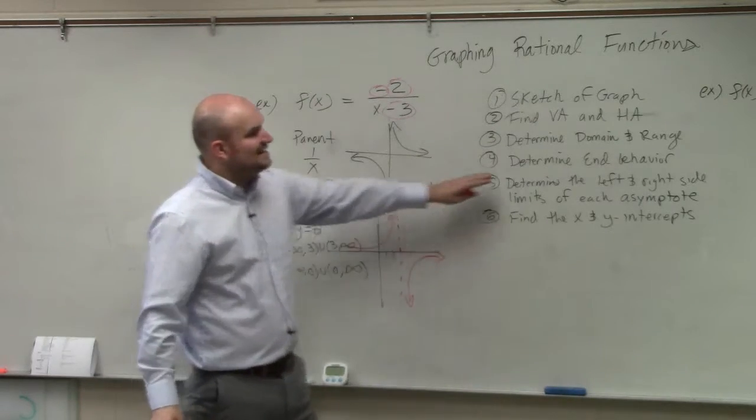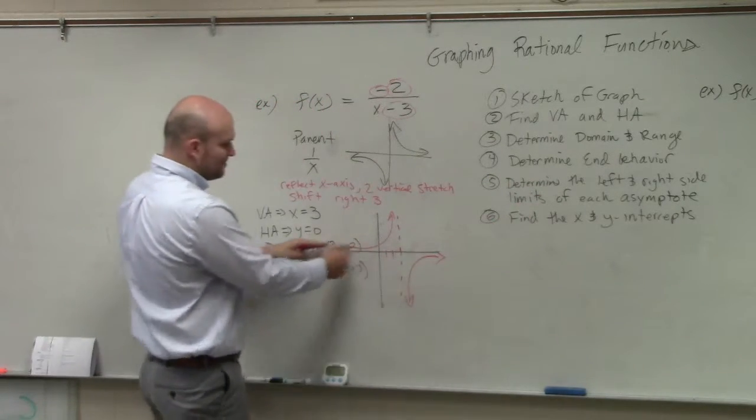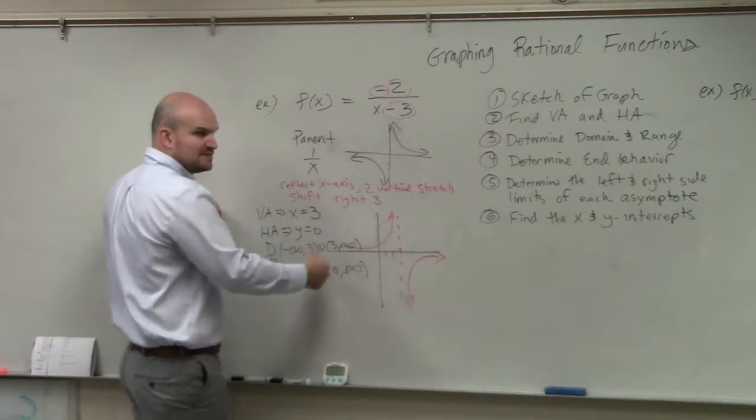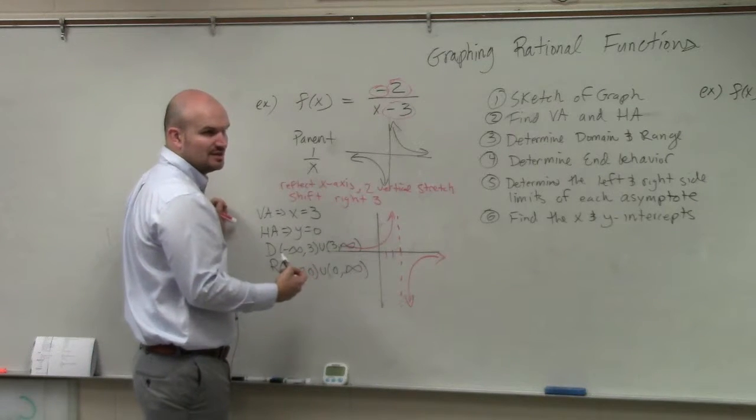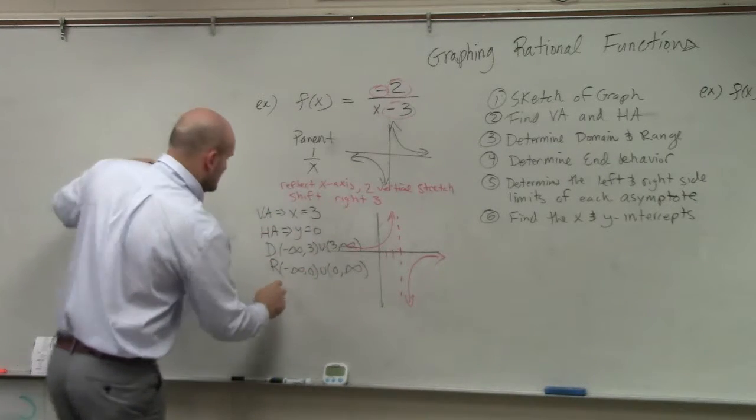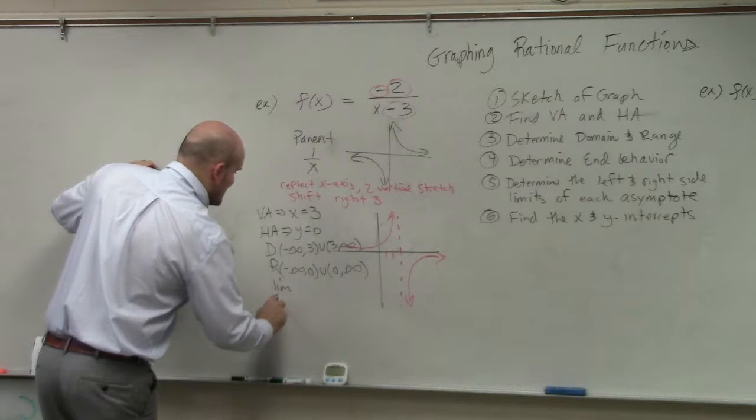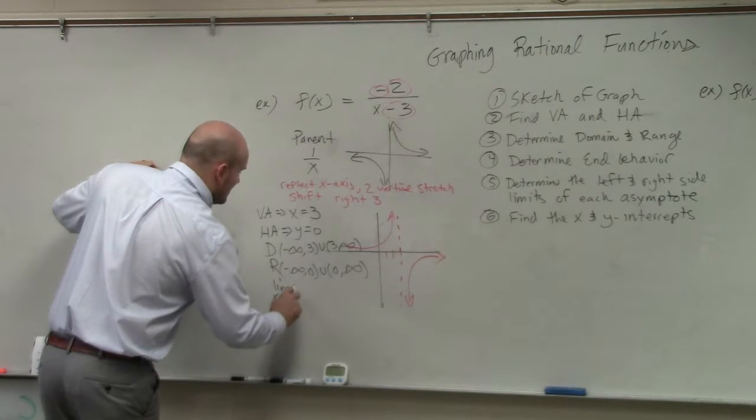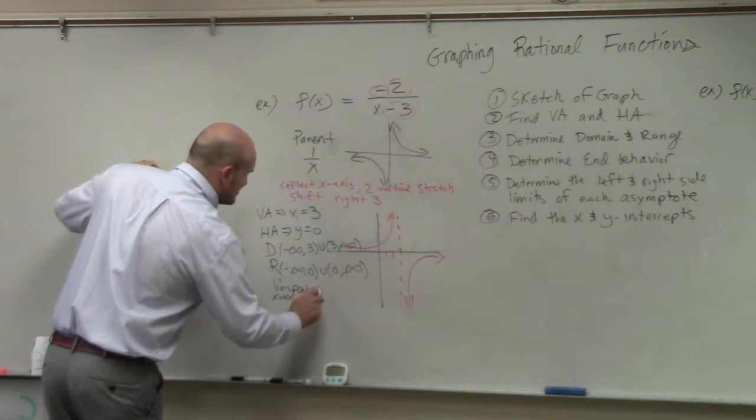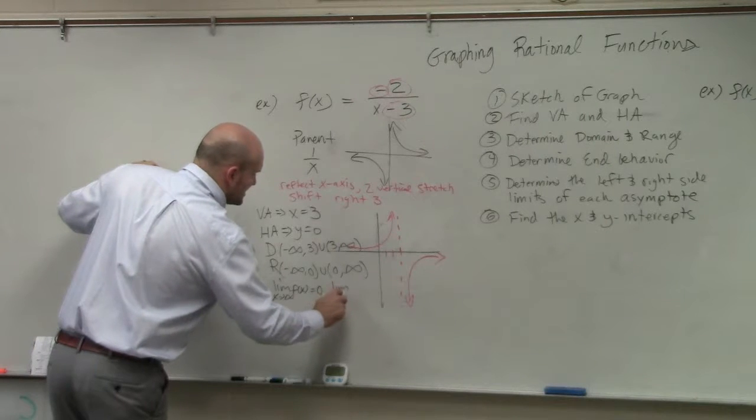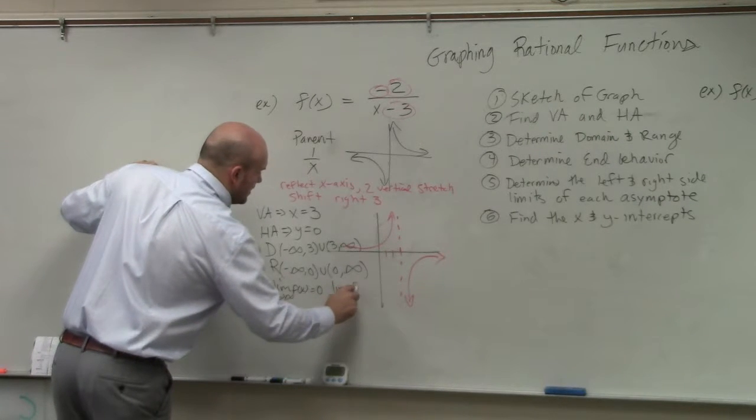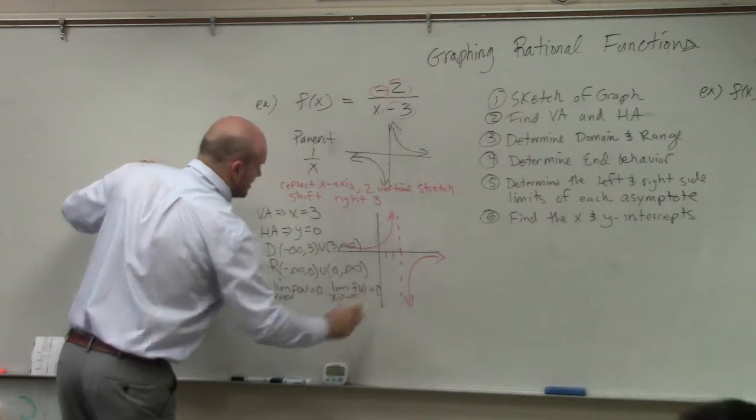Then it says, find the end behavior. You guys can see from left and to the right, this graph is still approaching the same value, which is 0. So I can say that the limit as x approaches infinity of my function f of x is equal to 0. And the limit as x approaches negative infinity of f of x is equal to 0.